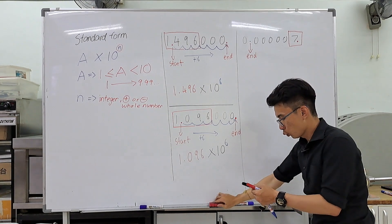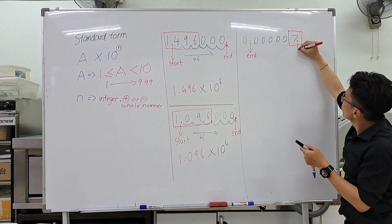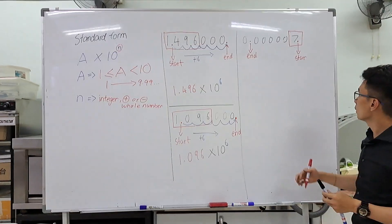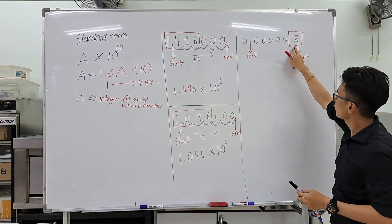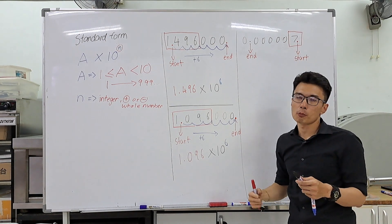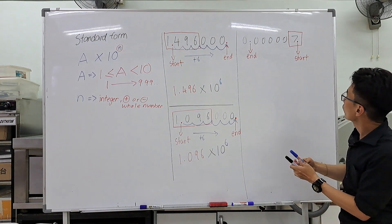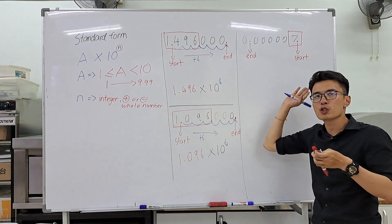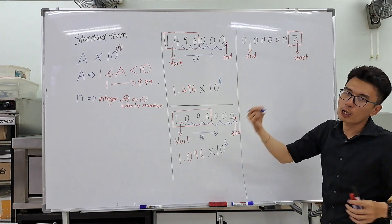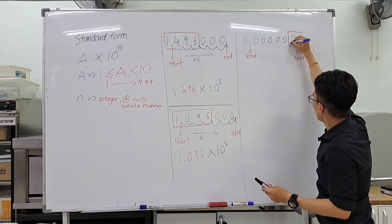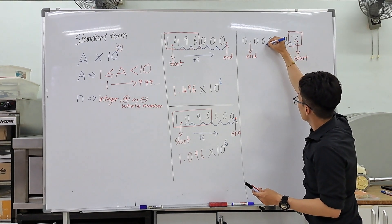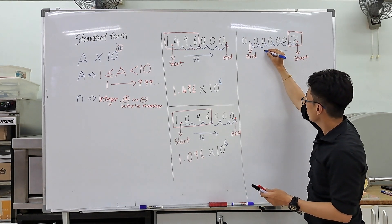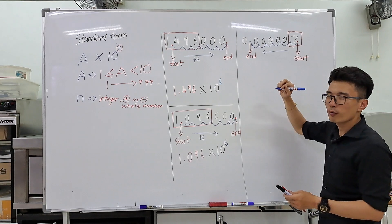Having done that, we know that is our starting position. All we need to do is go from the start to the end and count how many decimal places we have to jump. Our start is on the right and we end on the left, so we jump to the left: one, two, three, four, five, six — six steps to the left.